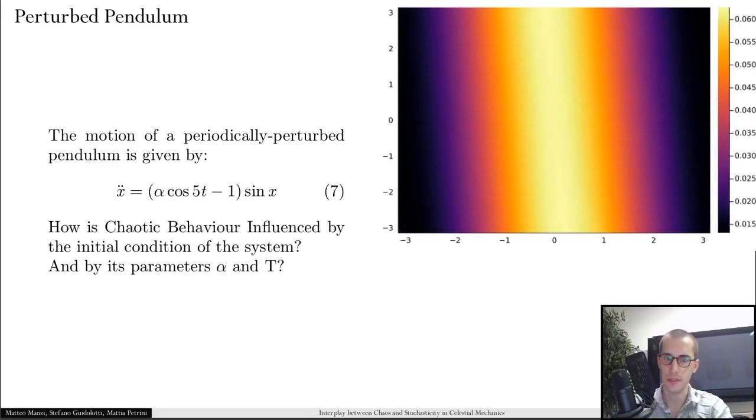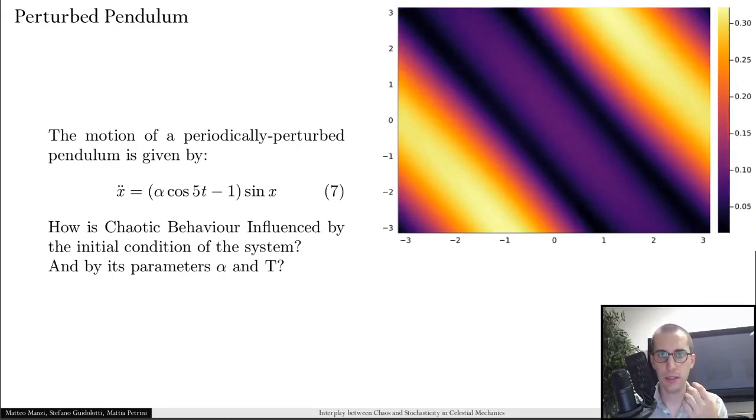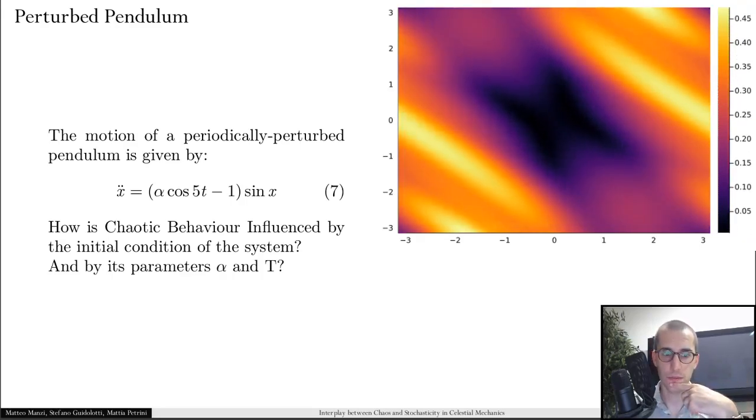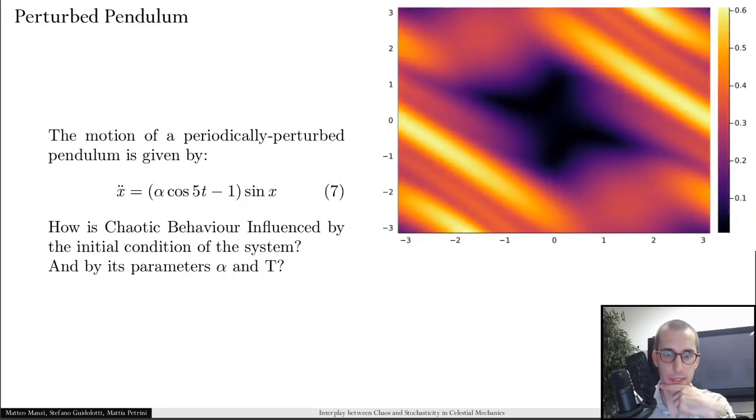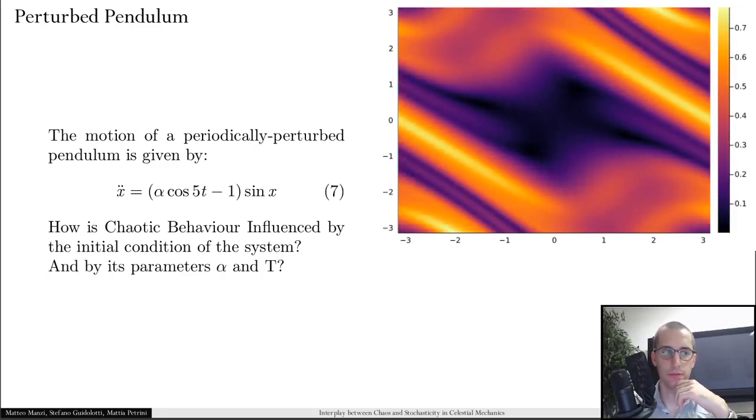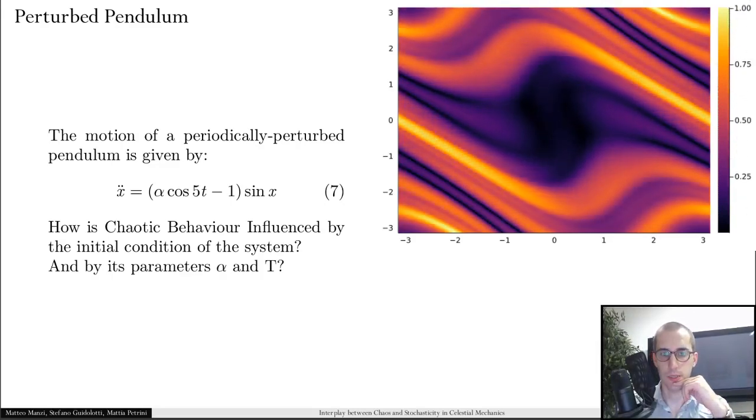Again, we can see what happens changing the value of parameters. Parameters that can be, in principle, anything. For example, here is alpha, but also it can be t, so the value of the integration time. You can see that this structure emerges out of increasing the propagation time.